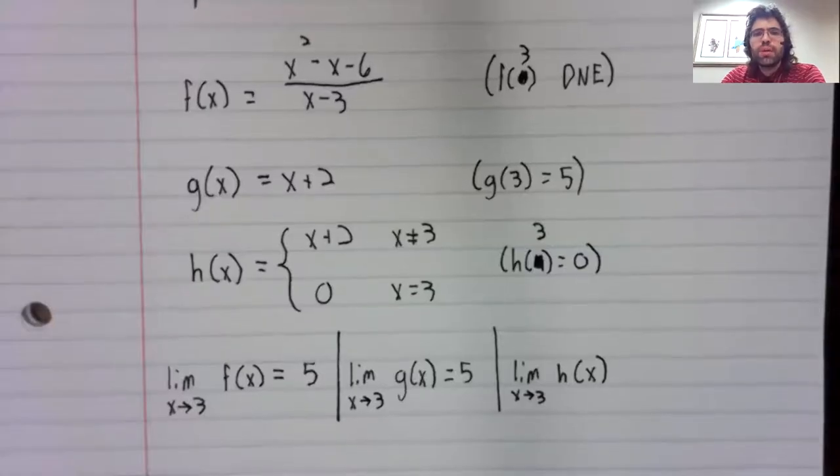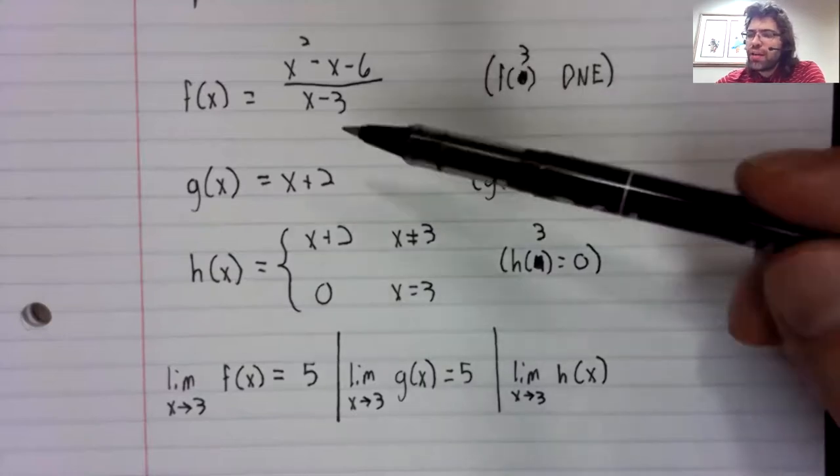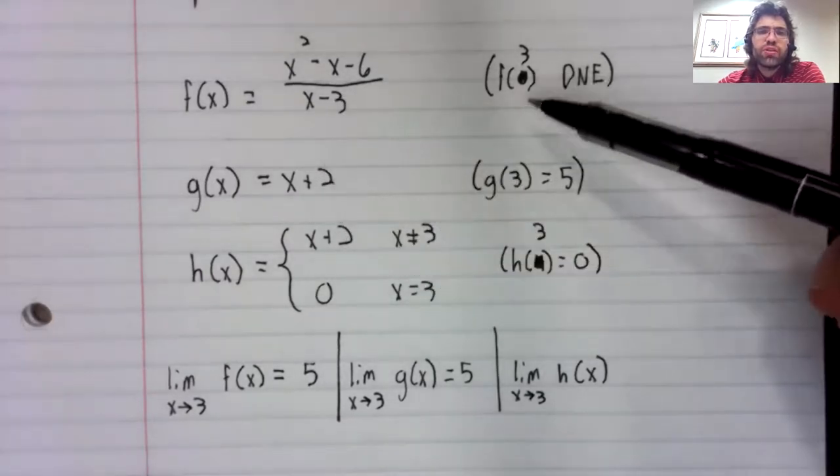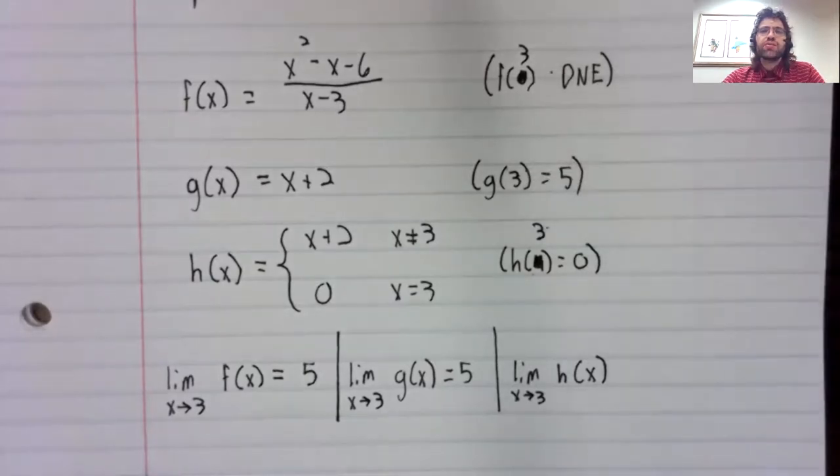What about the limit as x approaches three of h of x? Well, again, these functions are all identical. The only point where they differ is at three itself. And when we construct these tables, we don't look at what happens at three itself.